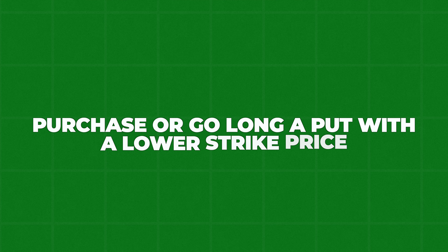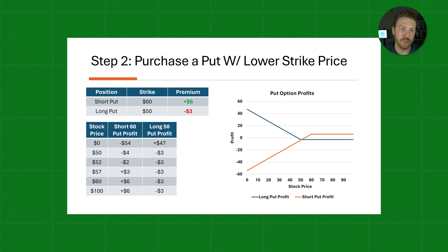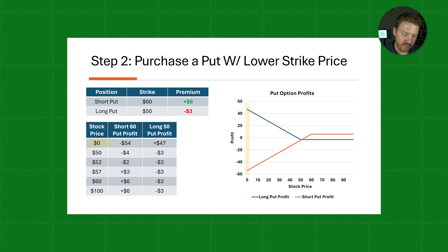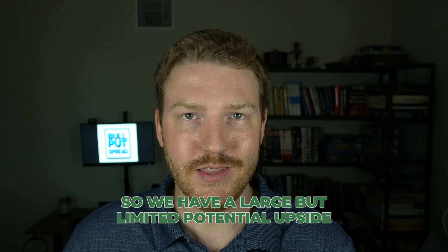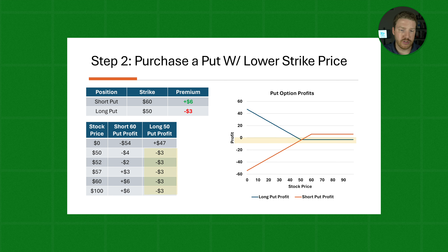The second step is to purchase or go long a put with a lower strike price. In this example, we'll assume the put we are going long has a strike price of $50, but we have to pay a $3 premium to receive that option. We can see our payoff profile in the rightmost column of the table, which tells us that our maximum profit can be had when the stock price is $0 — we're selling something for $50 that's actually worth $0, which is a $50 gain. However, we offset the $3 premium we paid, so our total profit is $47. The most we can ever lose is just $3, because once the stock price hits $50, this put option is no longer exercisable, and at any value above $50 our put will have just lost us $3.